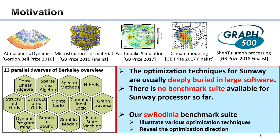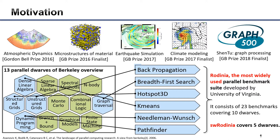Now I will introduce the motivation of our work. Firstly, existing optimization techniques based on Sunway processors are always tightly coupled with the application logic and buried deeply in the code. For example, the climate modeling application, which won the 2017 Gordon Bell Prize, consists of over half a million lines of code, making it really difficult for programmers to learn these optimization techniques. Secondly, there are no benchmark suites for Sunway processors so far. So we implement Sunway Rodina to illustrate various optimization techniques and reveal the optimization directions.